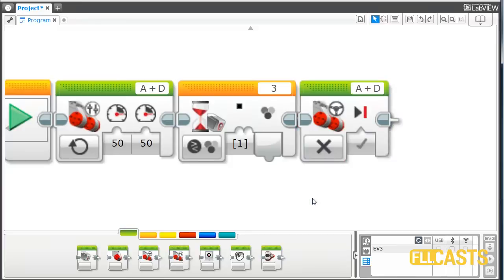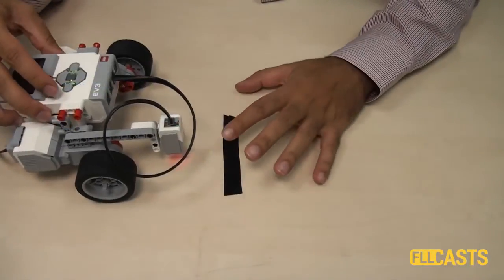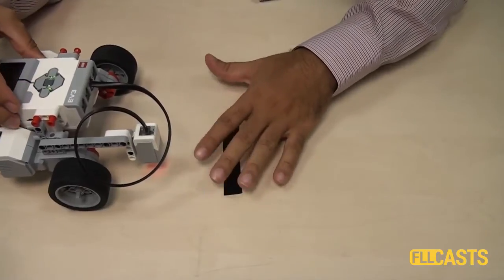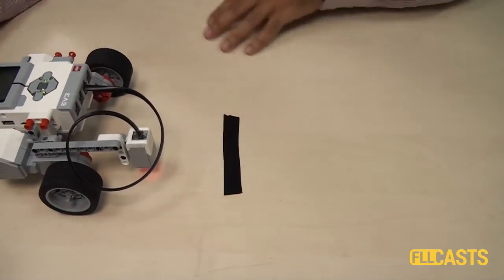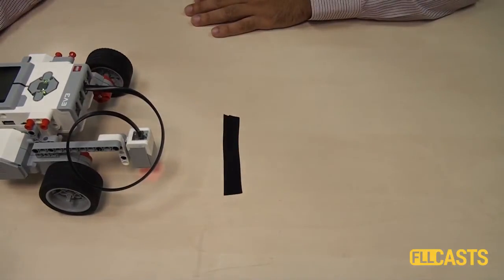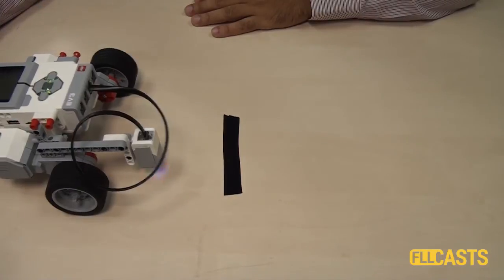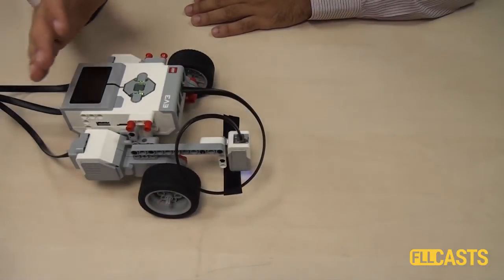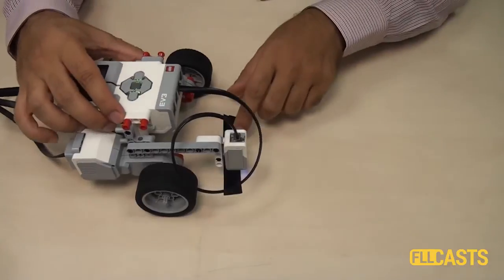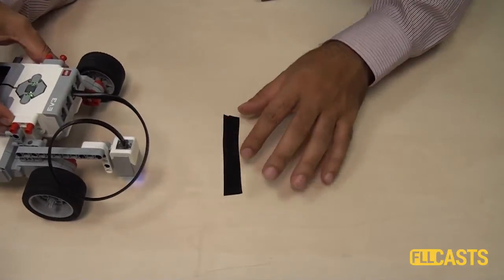Let's download and run the program. This here is the robot. This is the color sensor. And now we'll start to download the program. The robot moves until it reaches the black line and it stops.